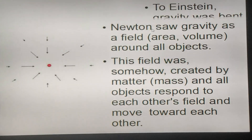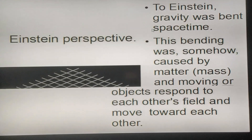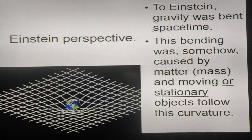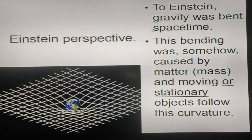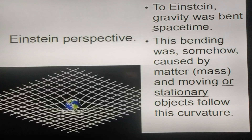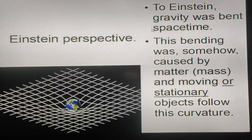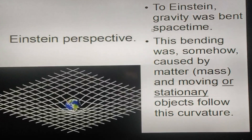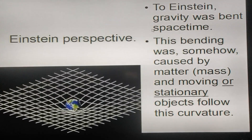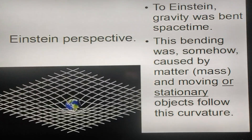The second one is Einstein's idea. To Einstein, gravity was bent spacetime. This bending was somehow caused by matter, mass, and all moving or stationary objects follow this curvature.